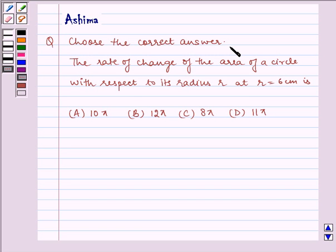Choose the correct answer. The rate of change of the area of a circle with respect to its radius r at r = 6 cm is: (A) 10π, (B) 12π, (C) 8π, (D) 11π.